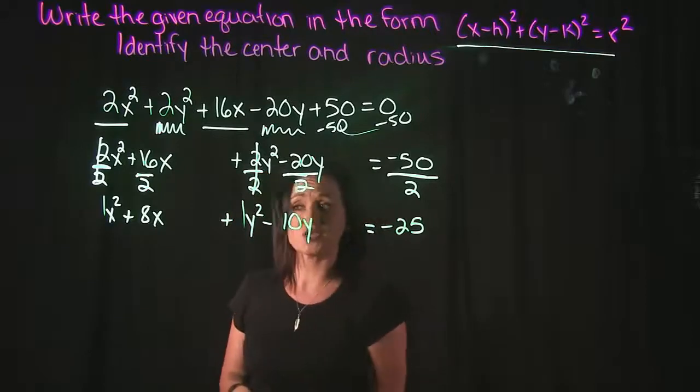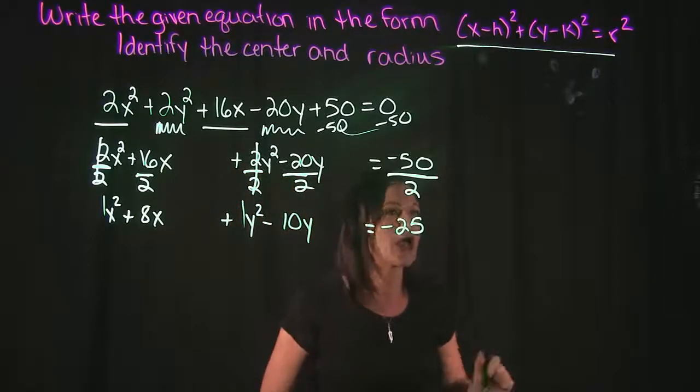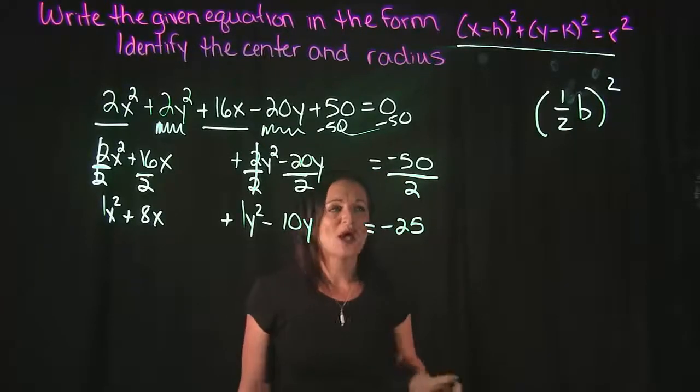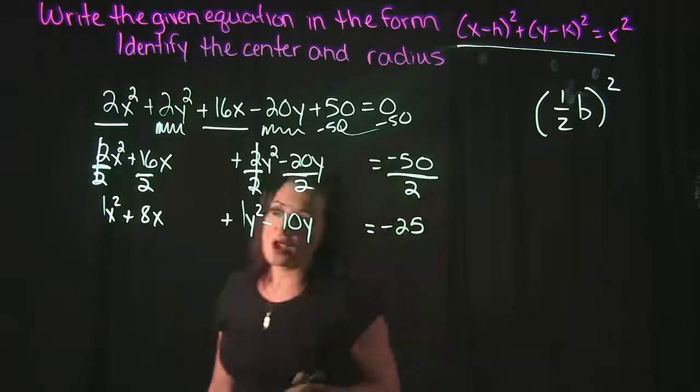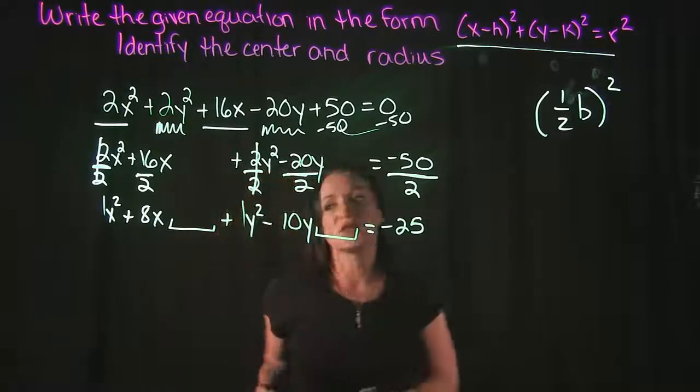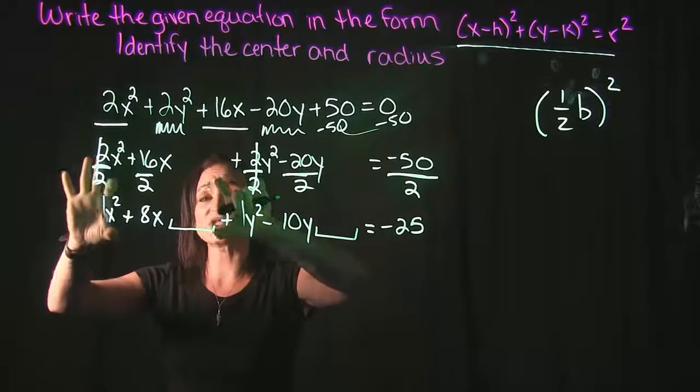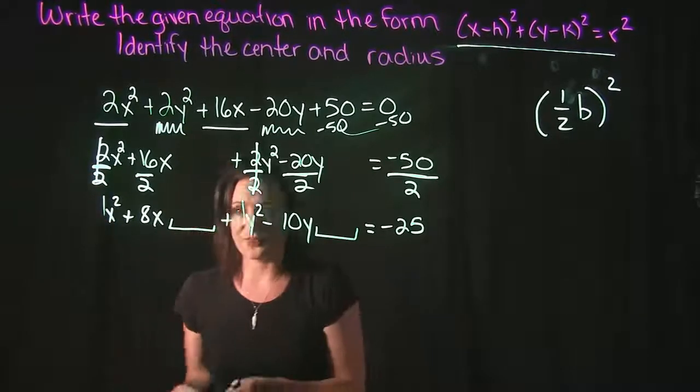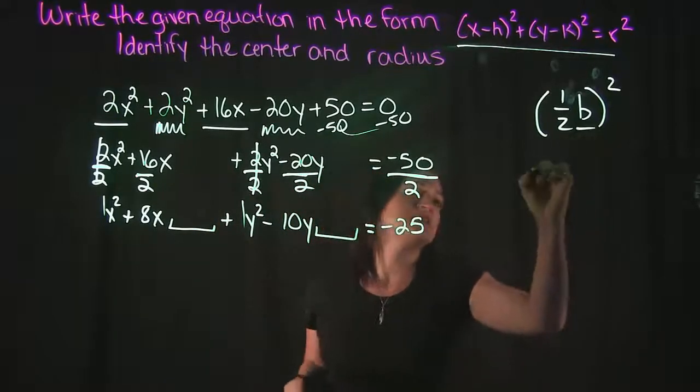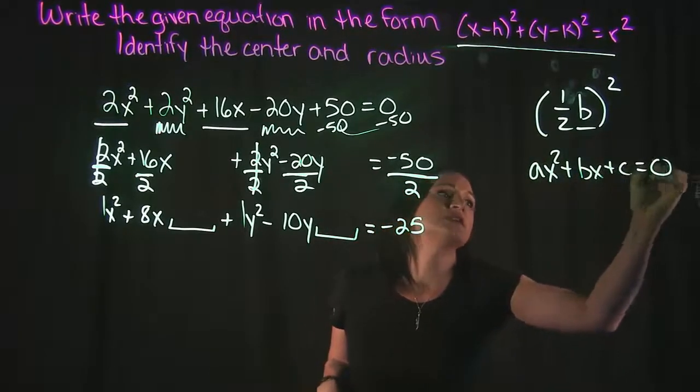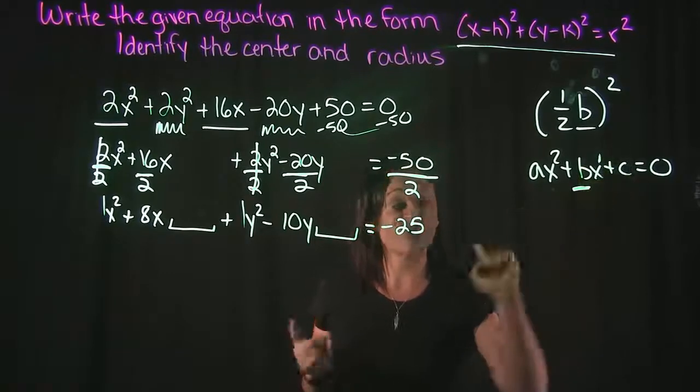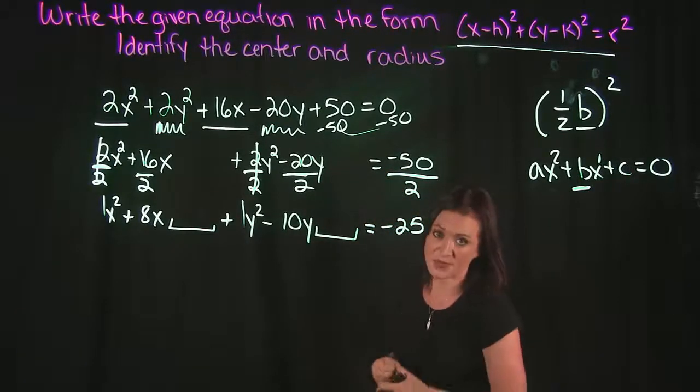Now we can complete the square. And again, we're going to do this twice. Once for the x's, once for the y's. When you complete the square, what you need to know is you need to be aware of this little mini formula right over here: 1/2 times b squared. For the whole process of completing the square, we're trying to add this magic number, this third term onto each one of these. That's going to allow us to factor each one of these into a perfect squared binomial. The way that we find that magic number is by this little formula. Now b signifies your middle term in a quadratic equation. a is the coefficient of your x² term. b is the coefficient of your x to the first power term. This is the term that we need to be aware of here.